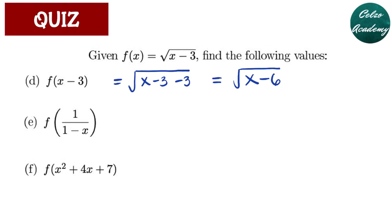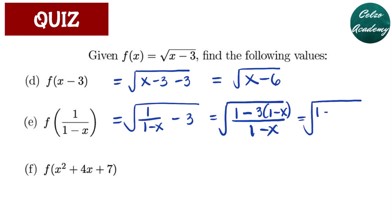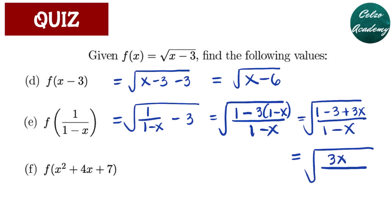For question letter E, f of 1 over 1 minus x — plugging in 1 over 1 minus x, we have the square root of 1 over (1 minus x) minus 3. Simplifying further, we find the LCD of the denominator, which is 1 minus x. We multiply 3 by 1 minus x, giving us the square root of 1 minus 3 plus 3x, all over 1 minus x. Simplifying the numerator gives 3x minus 2, over denominator 1 minus x.